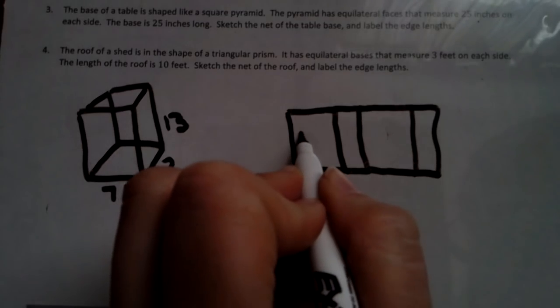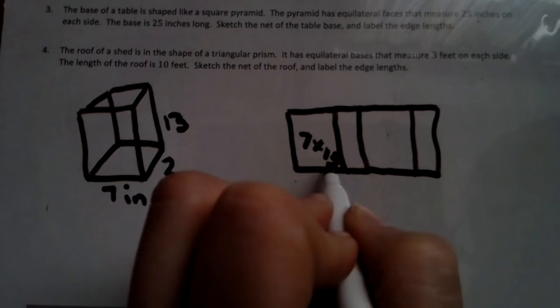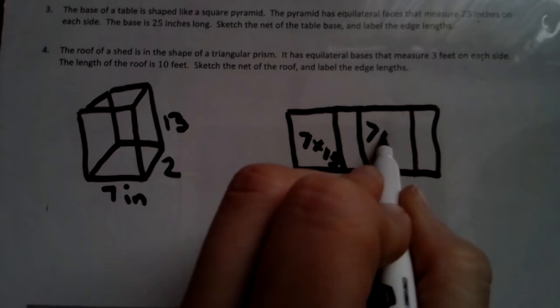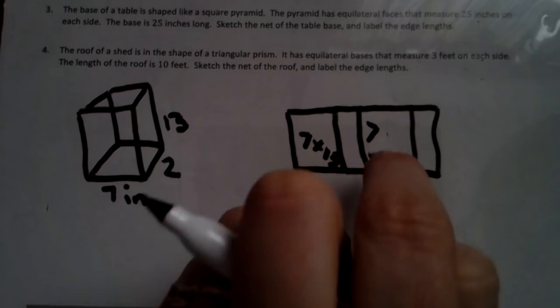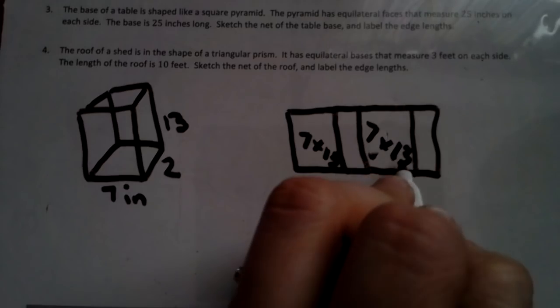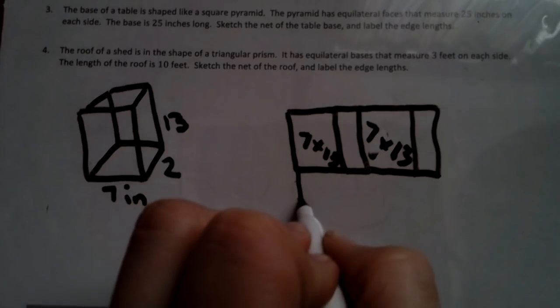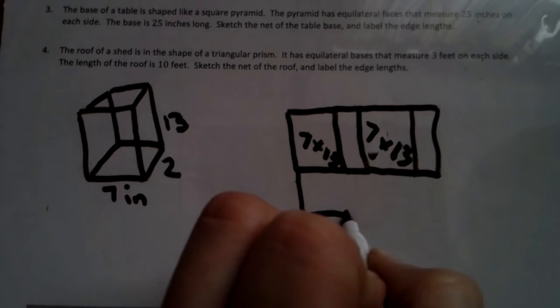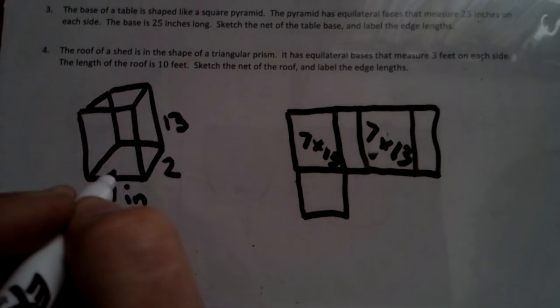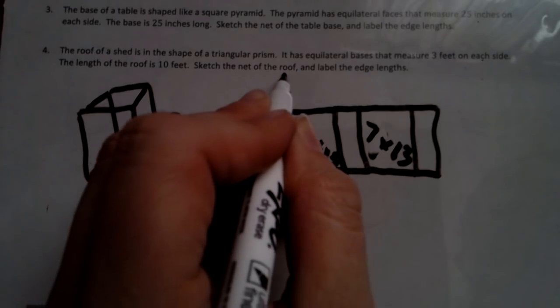So we could say this is the seven by 13. And so this is the seven by 13. And then we have a seven by two bottom, seven by two top.